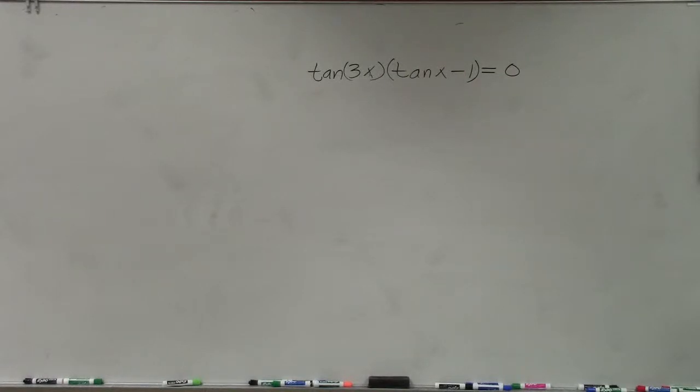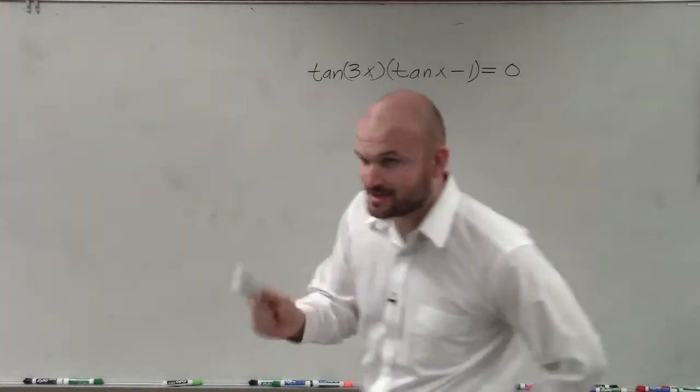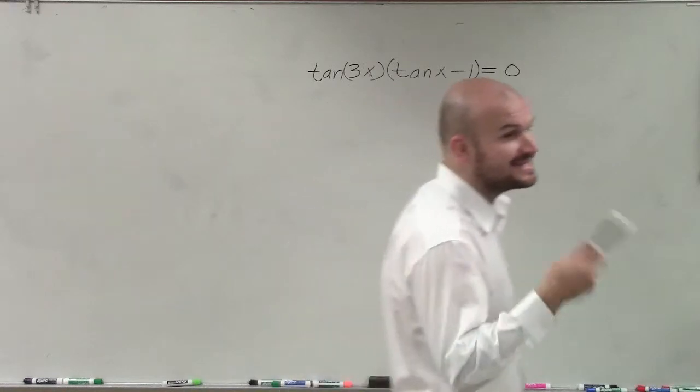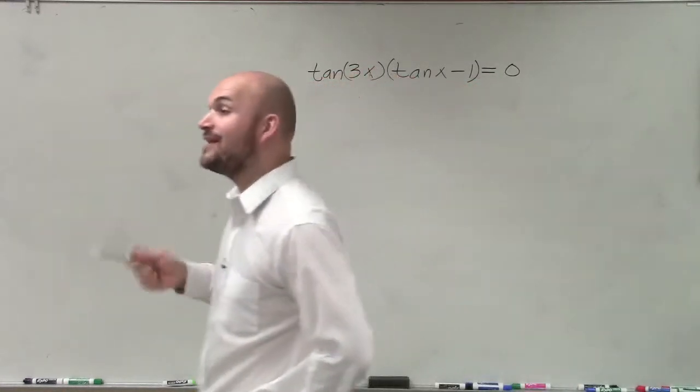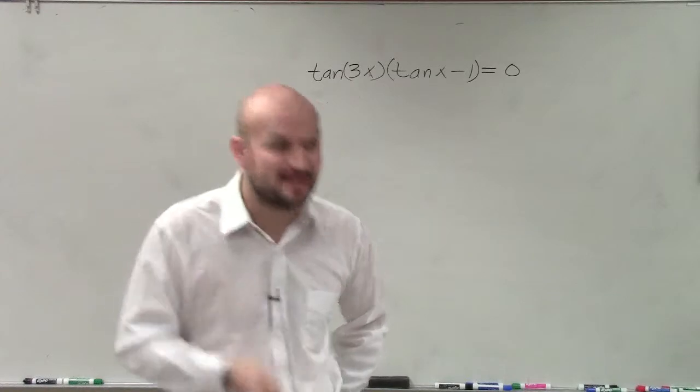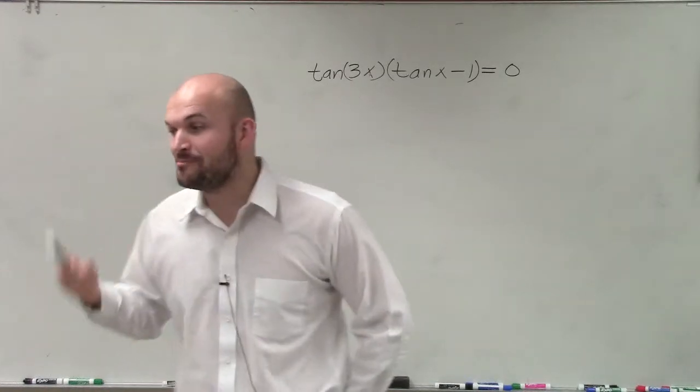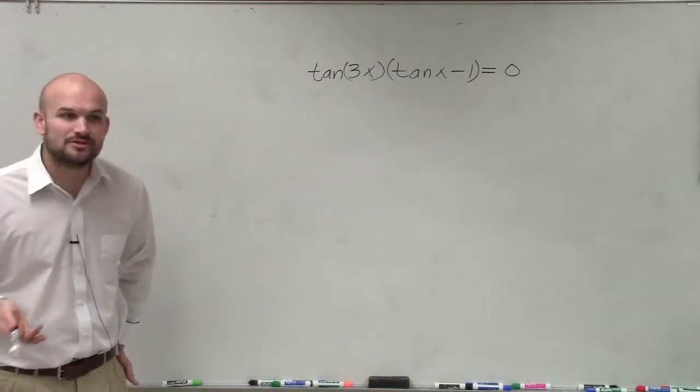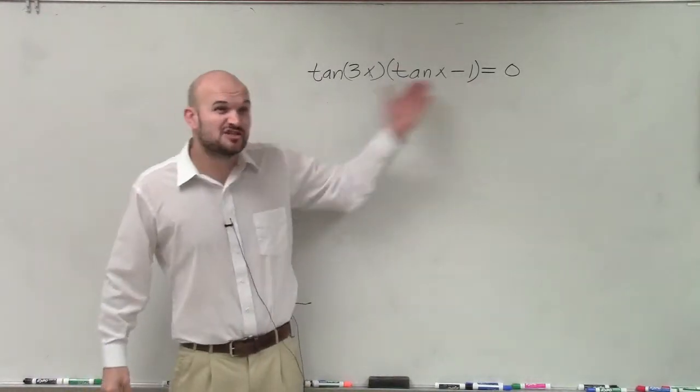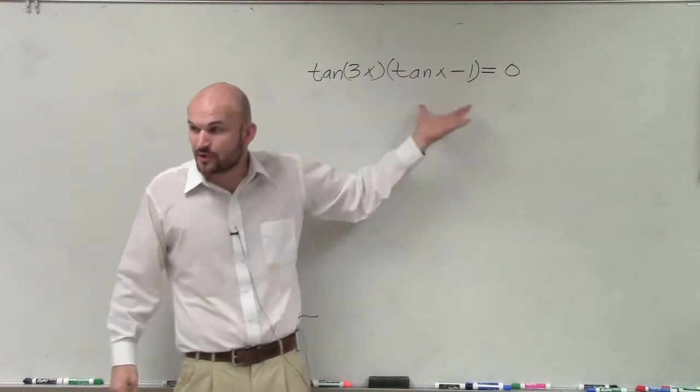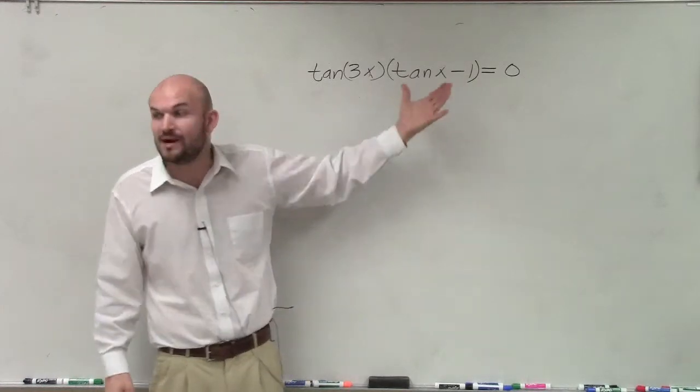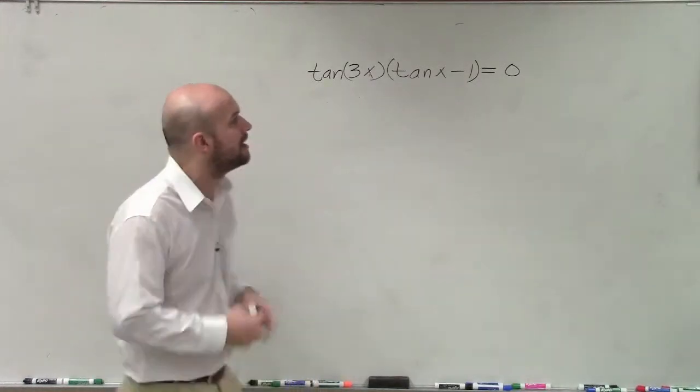One thing I notice about this problem is that I have a product that is equal to 0. So whenever I have a product that is equal to 0, I know that I can now apply the zero product property. This is going back from chapter 2. This is exactly what we want to obtain. So we don't want to multiply this through because we're at exactly where we want to be at. That's why we factor, because we want to get to this point. We want to have a product that is set equal to 0.